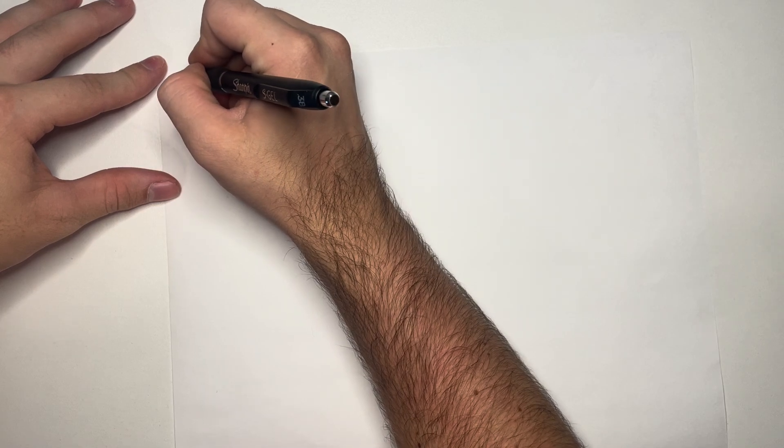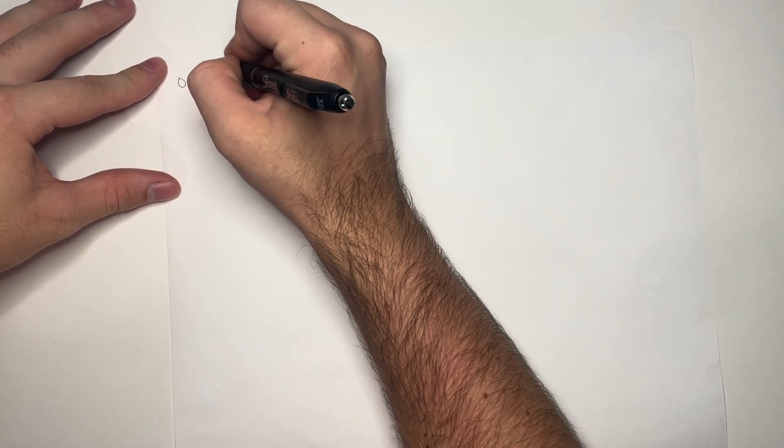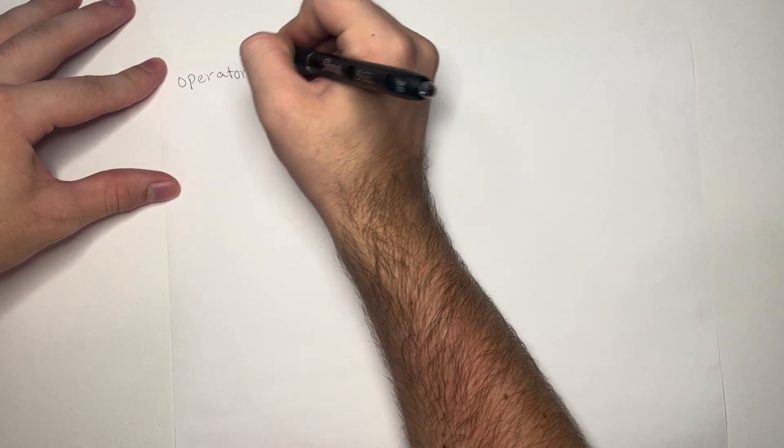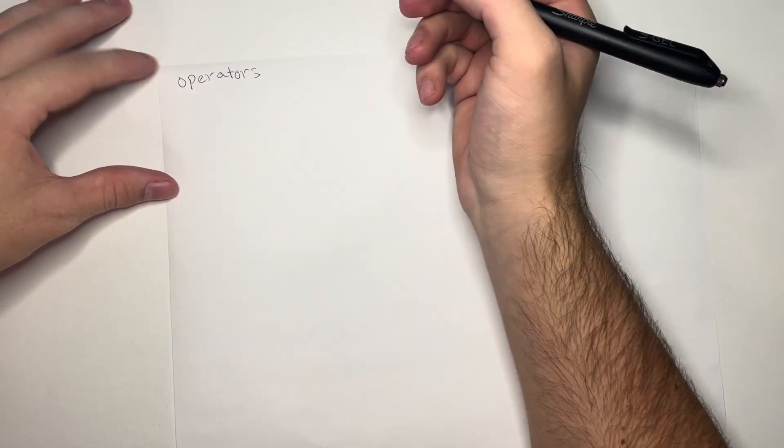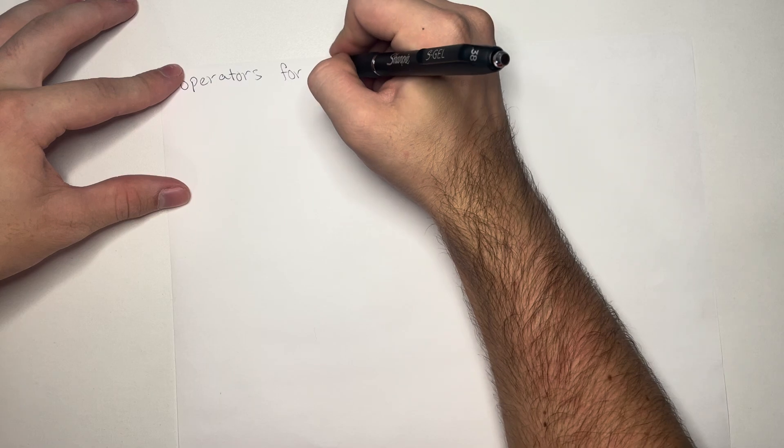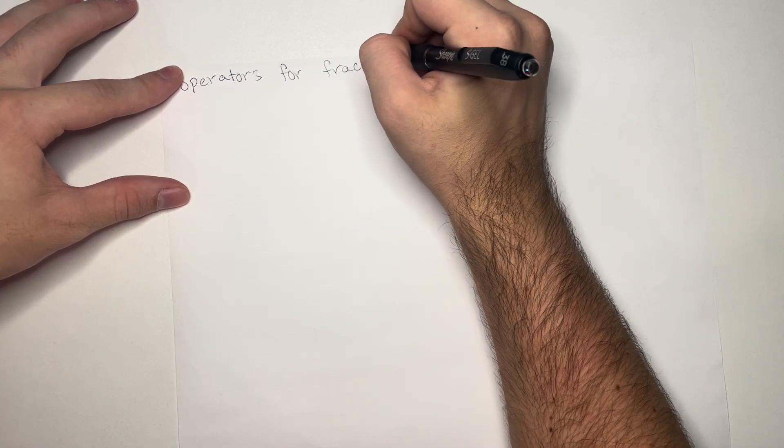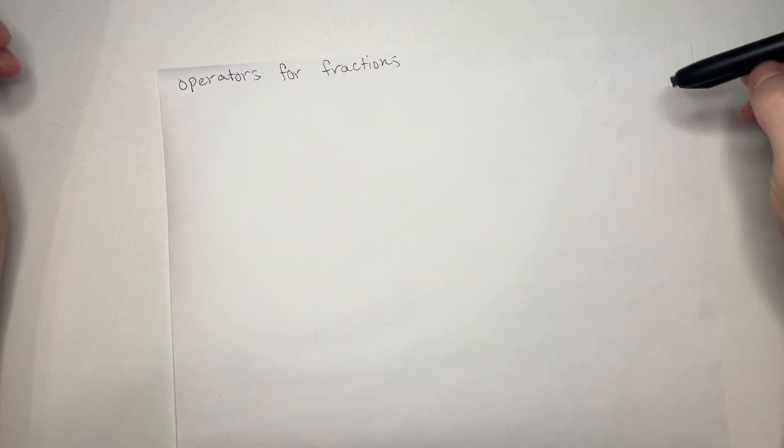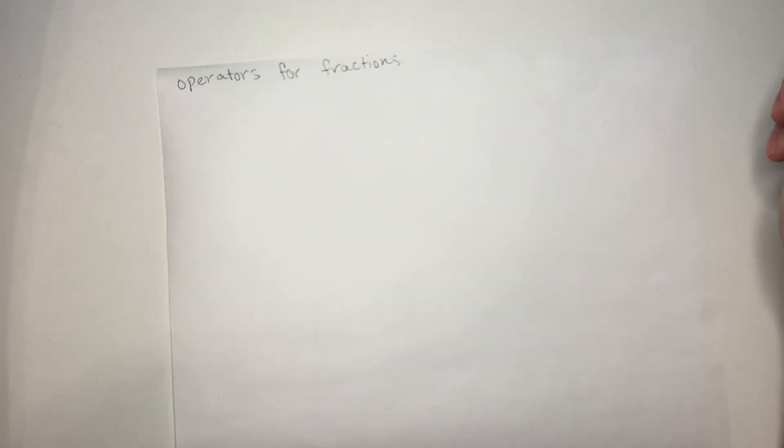Last time, we talked about the geometric understanding of fractions. We learned that you can represent a fraction as a piece of a shape, such as a circle.